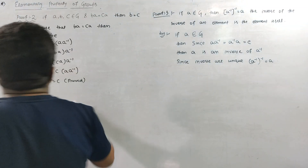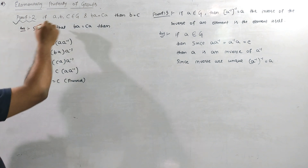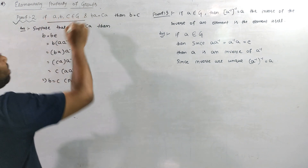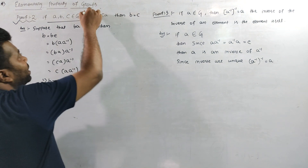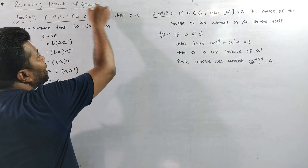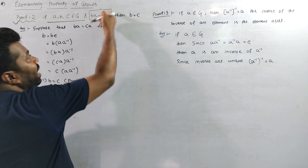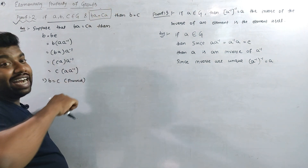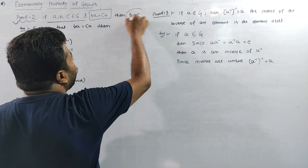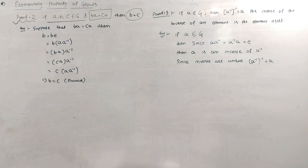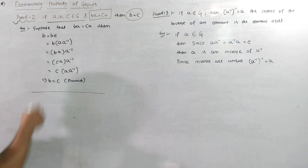Next, proof number 2. If A, B, C belong to G, and B·A = C·A, then by the right cancellation law, B is equal to C. Let me explain it to you.